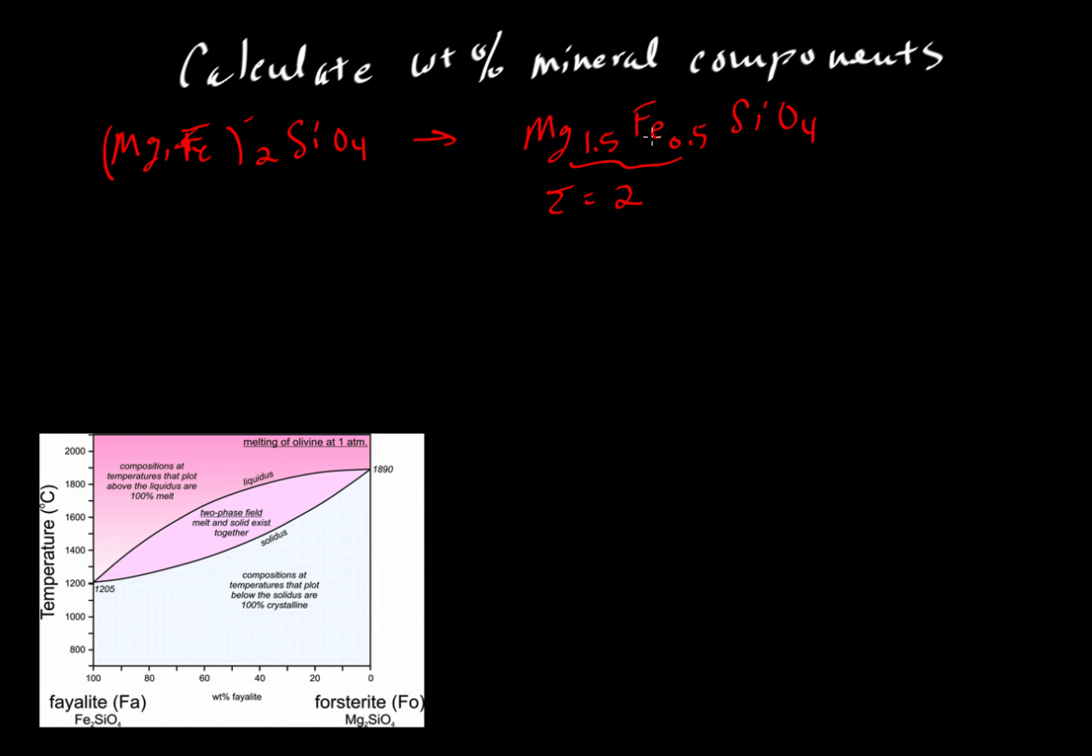We don't have to write it this way. This is really just a recipe. There's nothing special about the particular values we use, except for their absolute proportions. If you don't like fractions, we can multiply the whole thing by 2 and write it as Mg₃FeSi₂O₈.